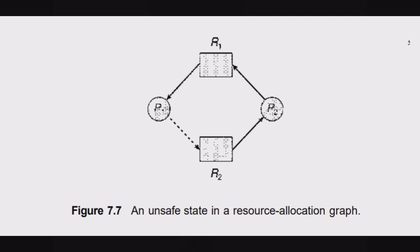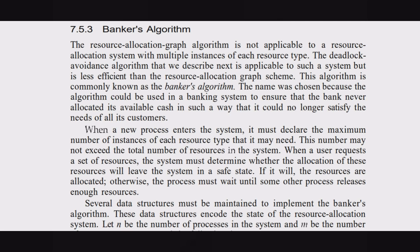The third method to avoid deadlock is the banker's algorithm. This is less efficient than the resource allocation graph but is applicable to a resource allocation system with multiple instances of each resource type. The banker's algorithm name was chosen because the algorithm could be used in a banking system to ensure the bank never allocates its available cash in such a way that it could no longer satisfy the needs of all its customers.